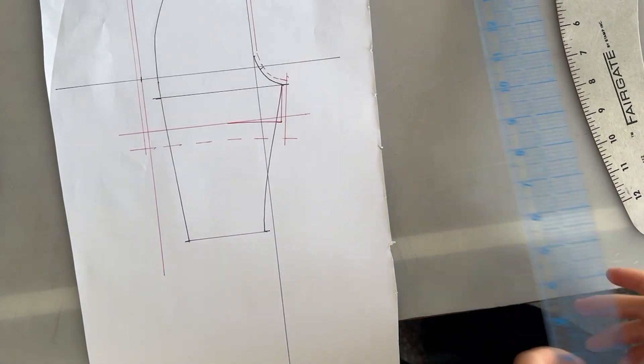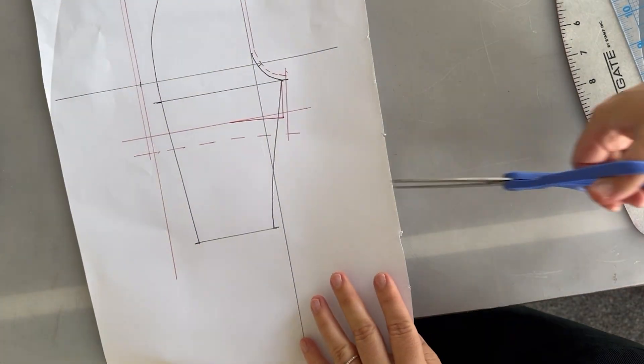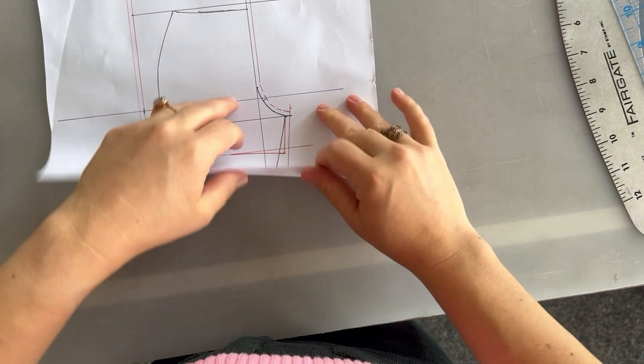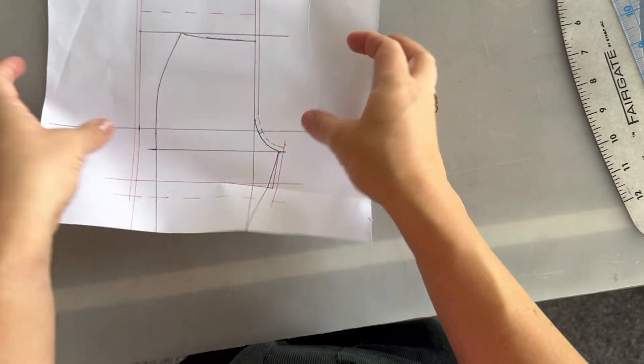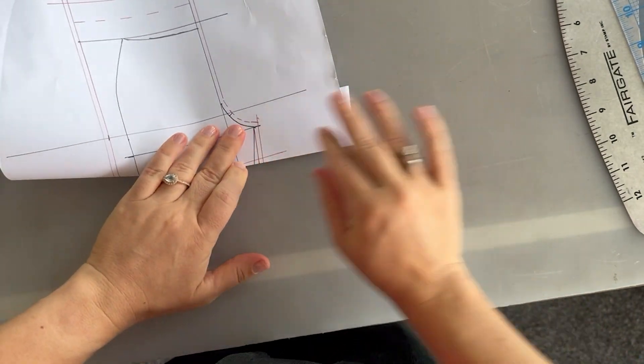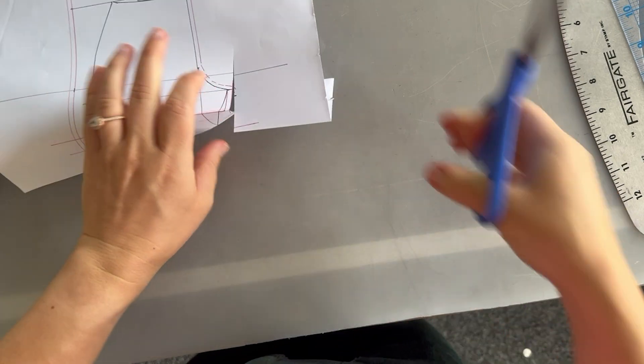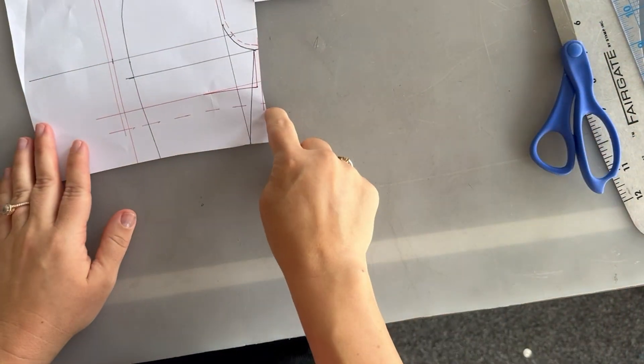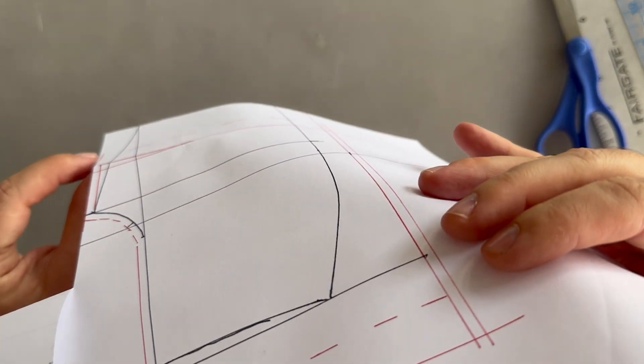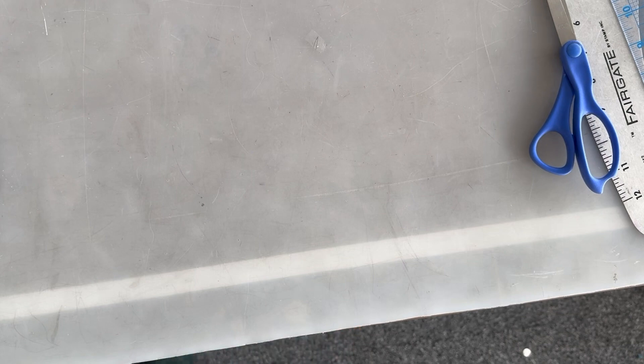And then before we cut this out, we have to make sure to true that hem. So when we fold up that hem, I'm going to cut off my excess here. When we fold up that hem, we want it to kick out so that it matches that inseam. So with that little kick out is where my finished hem will be. So you should have that little trued so that whenever it folds up, it matches your inseam perfectly.